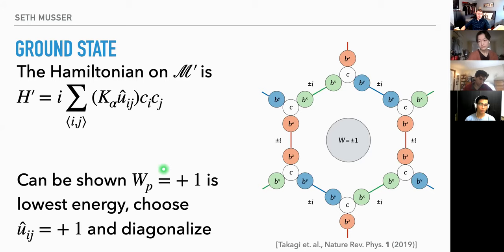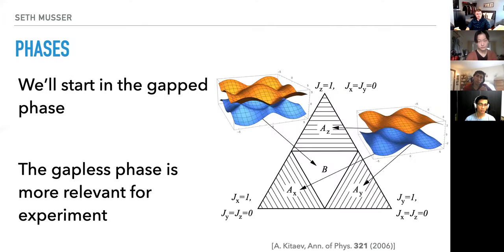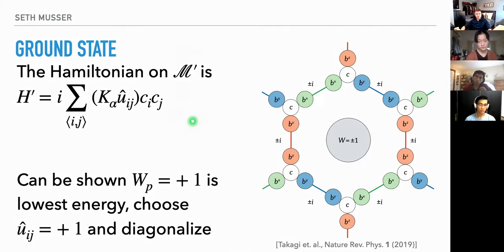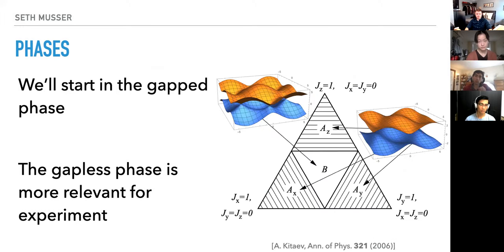We can show — Kitaev did this numerically, but there's actually a proof by Lieb, which Kitaev calls a very beautiful proof — that the ground state of this Hamiltonian is the one with plus ones on every single plaquette. We can use our gauge freedom to choose u equals plus one on every single link, and we'll have a quadratic Hamiltonian in c. For those who haven't taken solid state, you'll see this type of thing very shortly — it's just standard hopping on a hexagonal lattice, and with all u's equal to one it's straightforward to diagonalize.